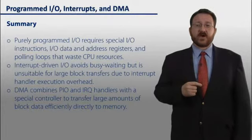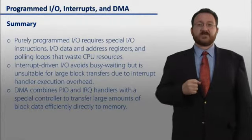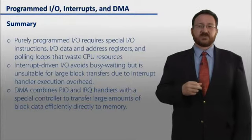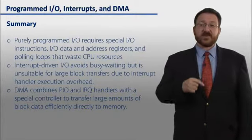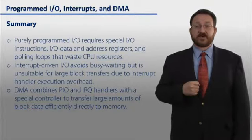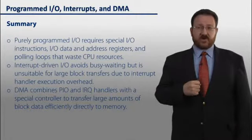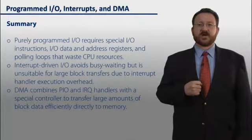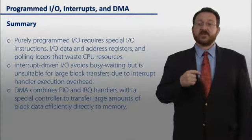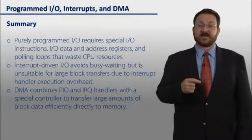In summary, a purely programmed IO approach requires special IO instructions and special IO data and address registers, and it uses polling loops that waste clock cycles to see if data is ready. Interrupt-driven IO, on the other hand, avoids the busy waiting, but it's not suitable for large block transfers because we're always going to be interrupting the CPU a byte at a time.